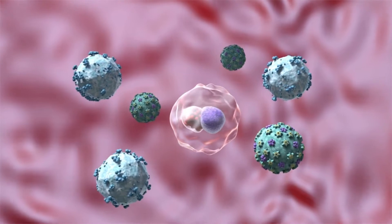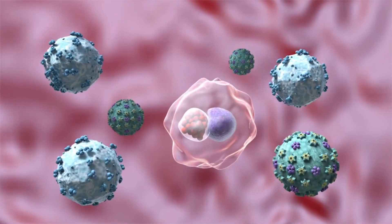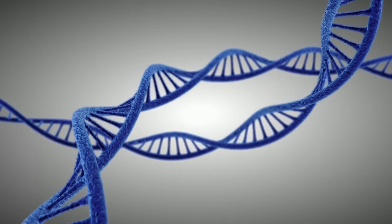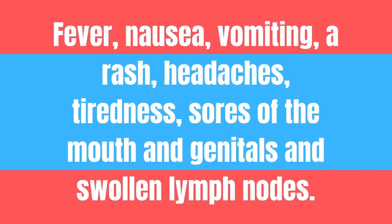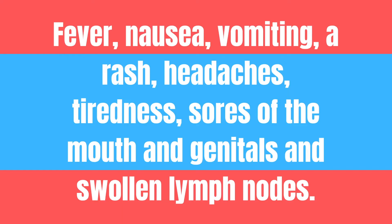The acute infection starts after someone is infected with HIV. The HIV virus will then infect this person's immune cells and will integrate its own genetic material into its host cells. During this phase, 40-90% of patients will develop flu-like symptoms 2-4 weeks after being infected. They may experience a fever, nausea, vomiting, a rash, headaches, tiredness, sores of the mouth and genitals, and swollen lymph nodes. Unfortunately, these are very non-specific symptoms which can be caused by many different diseases, and therefore are not often recognized as symptoms of an HIV infection.